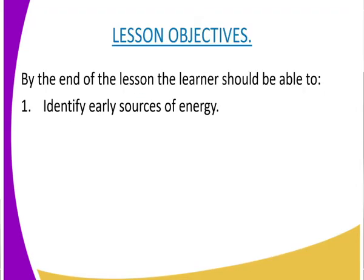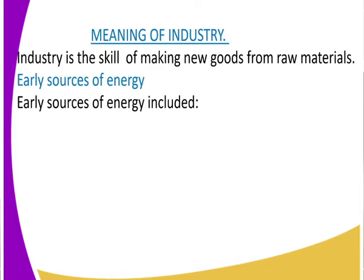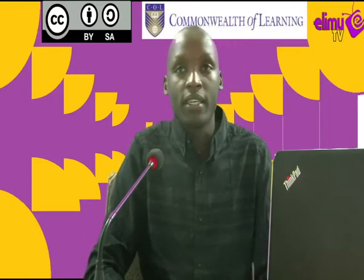By the end of the lesson, we'll get to identify some of the early sources of energy. But before we get to our lesson on industry, can someone tell us what the term industry means? Industry is the skill of making new goods from raw materials. For example, you make a rope from sisal, you make a pot from clay — those are skills. So the skill of making new goods from raw materials is what we call industry.